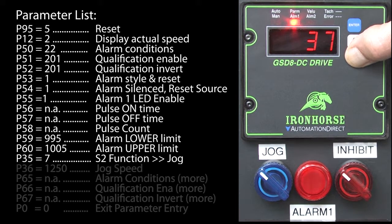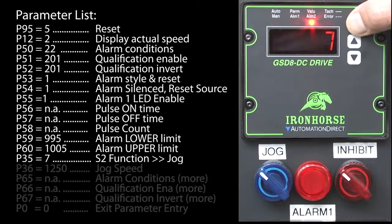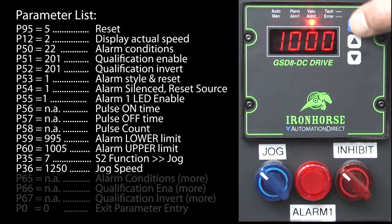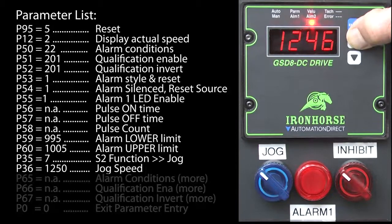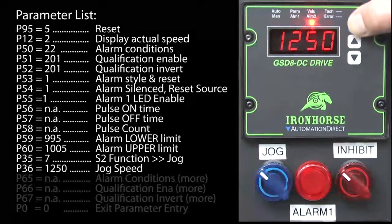Terminal S2 defaults to jog so we don't need to change that. So let's go to parameter 36 and change the jog speed to 1250 RPM which is outside our alarm limit so we can test that jog doesn't generate an alarm.